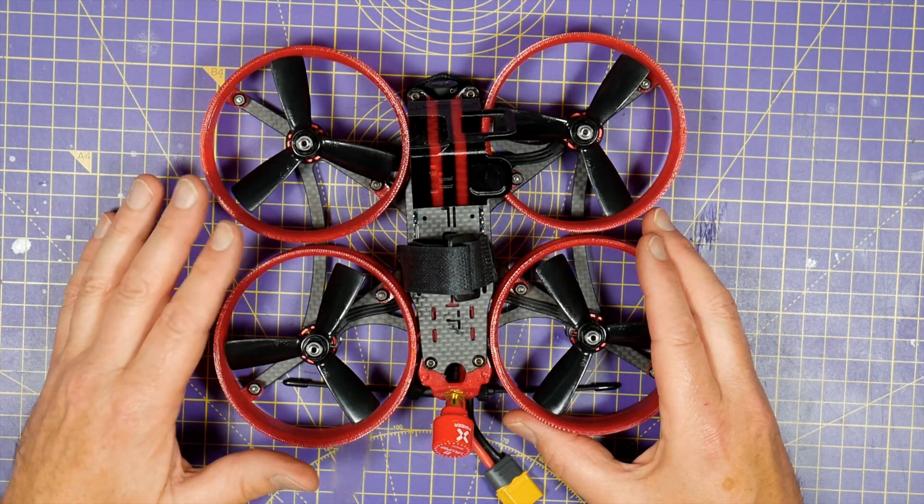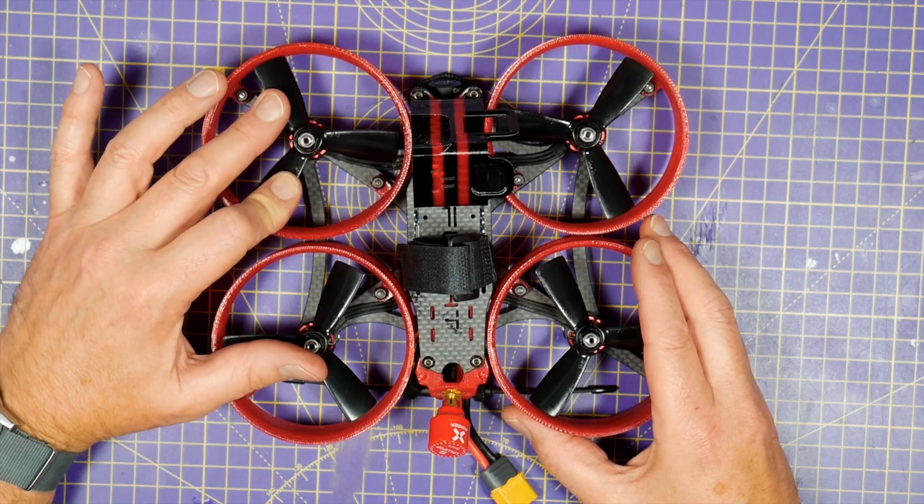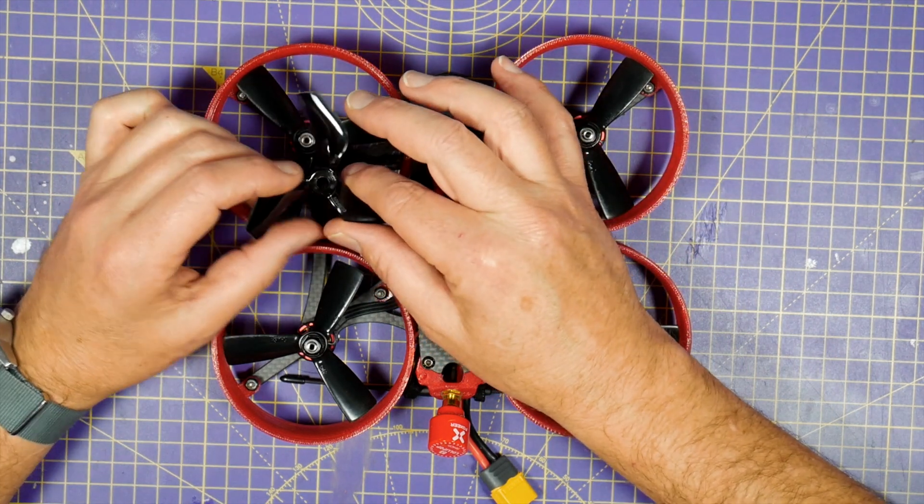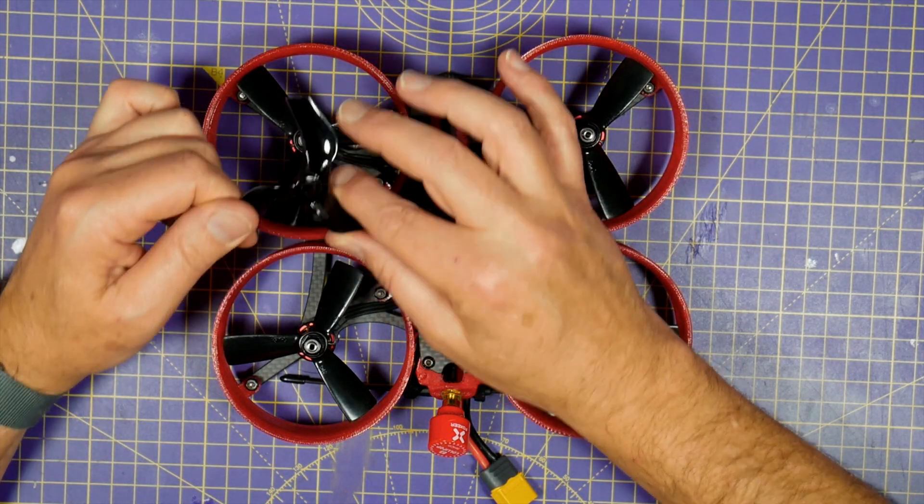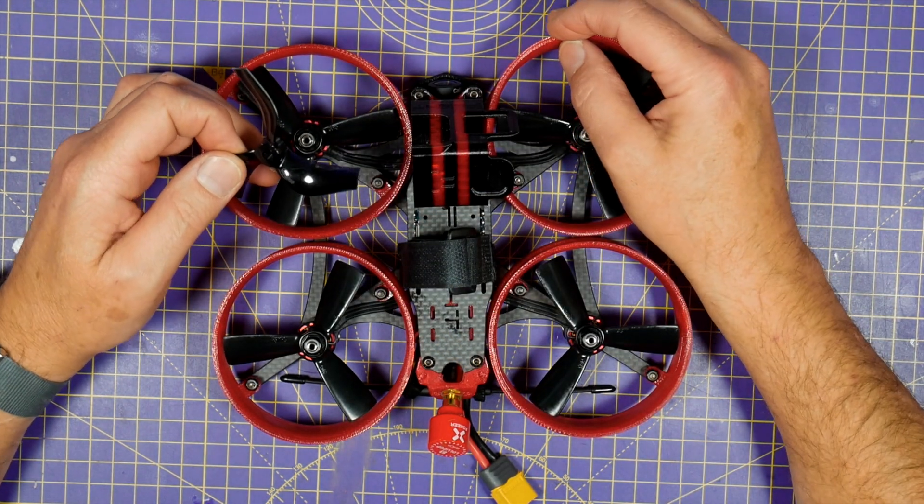And I wanted them to be a slightly tighter fit on the standard 3045 props. And I wanted some that would fit the Gemfan 75mm duct props that work so well on the squirt. And I wanted them in TPU rather than PLA.